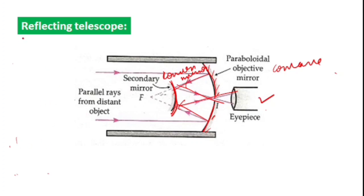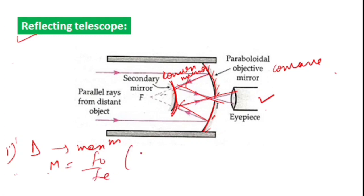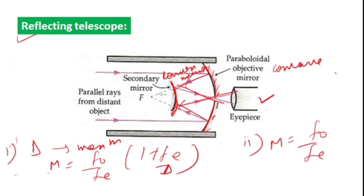The reflecting telescope is preferred due to its advantages over the astronomical telescope. For maximum magnification (image at D): m = (f₀/f_e)(1 + f_e/D). For minimum magnification (image at infinity): m = f₀/f_e. This concludes the discussion of all types of microscopes and telescopes in Chapter 9 — Ray Optics. Hope you liked this short revision series. Don't forget to subscribe, keep revising, and stay tuned. Thank you.